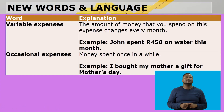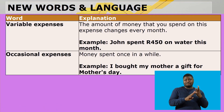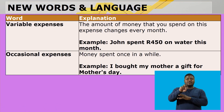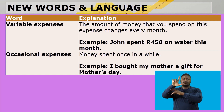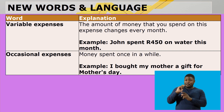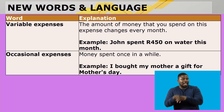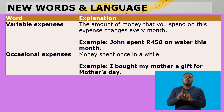Variable expenses: the amount of money that you spend on this expense changes every month. For example, John spent 450 rand on water this month. Remember, you don't use the same amount of water every month, therefore the expense will change.